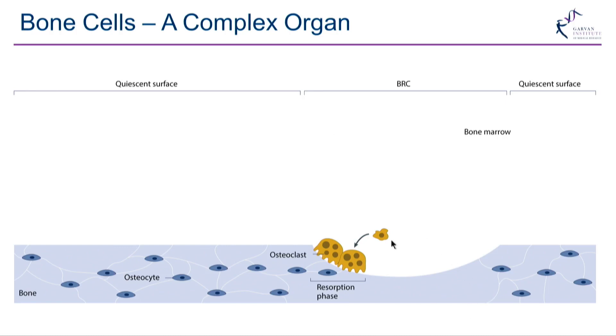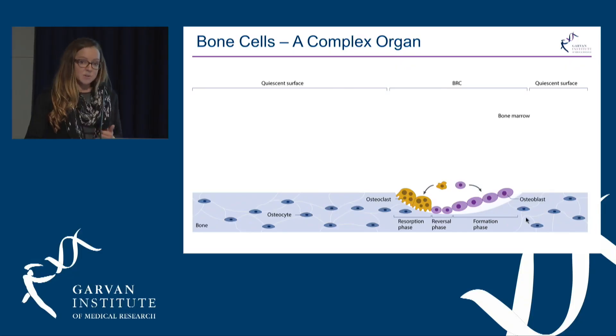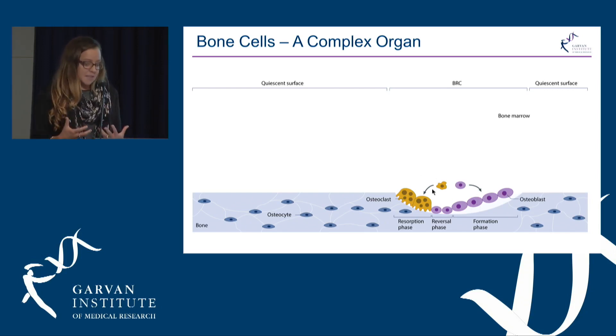We also have surfaces on the bone that are undergoing remodelling, which means the tissue is being turned over or replaced, because our tissue needs to maintain its strength. If there's any damage to the bone, we need to repair it and turn it over. This is carried out by osteoclasts — bone-resorbing cells that eat away at bone tissue when signalled to do so. Following this, osteoblasts lay down new bone tissue, shown here in purple. These cells are coupled together in an organised process to maintain our skeletal mass and integrity.